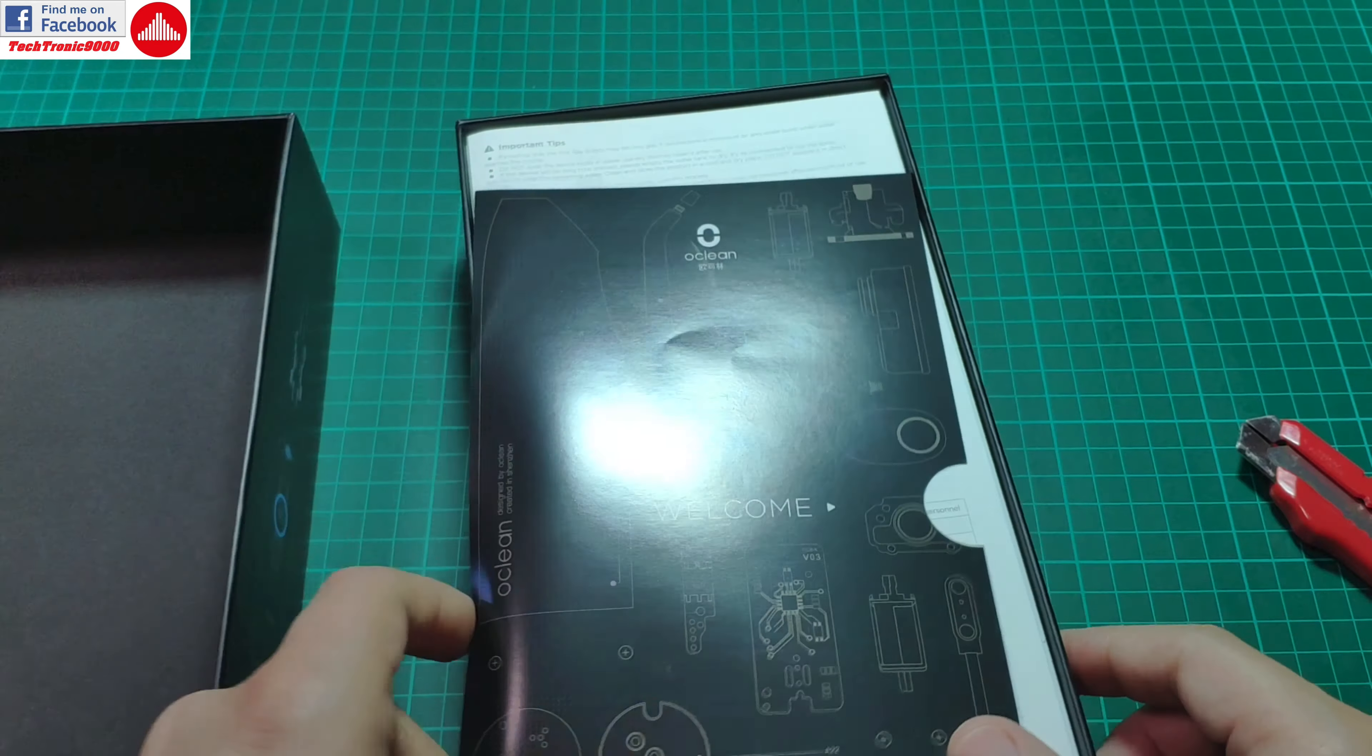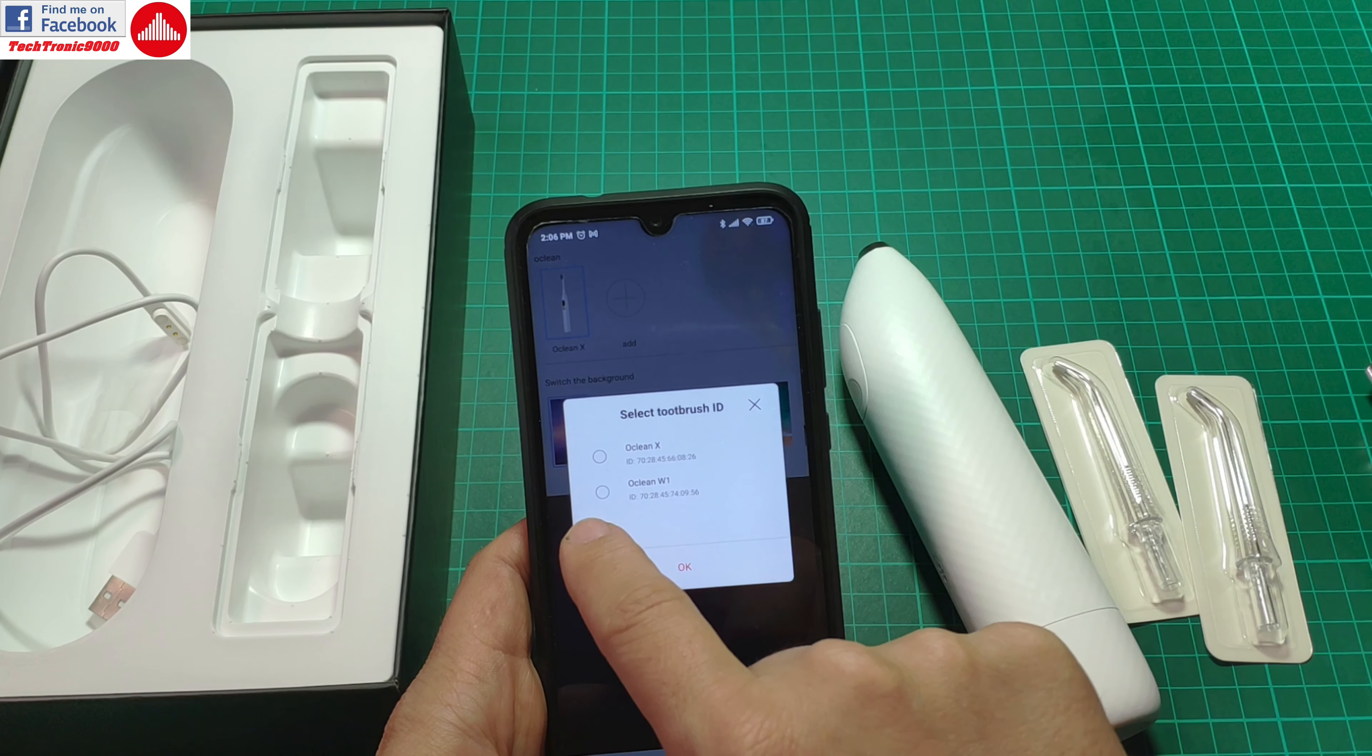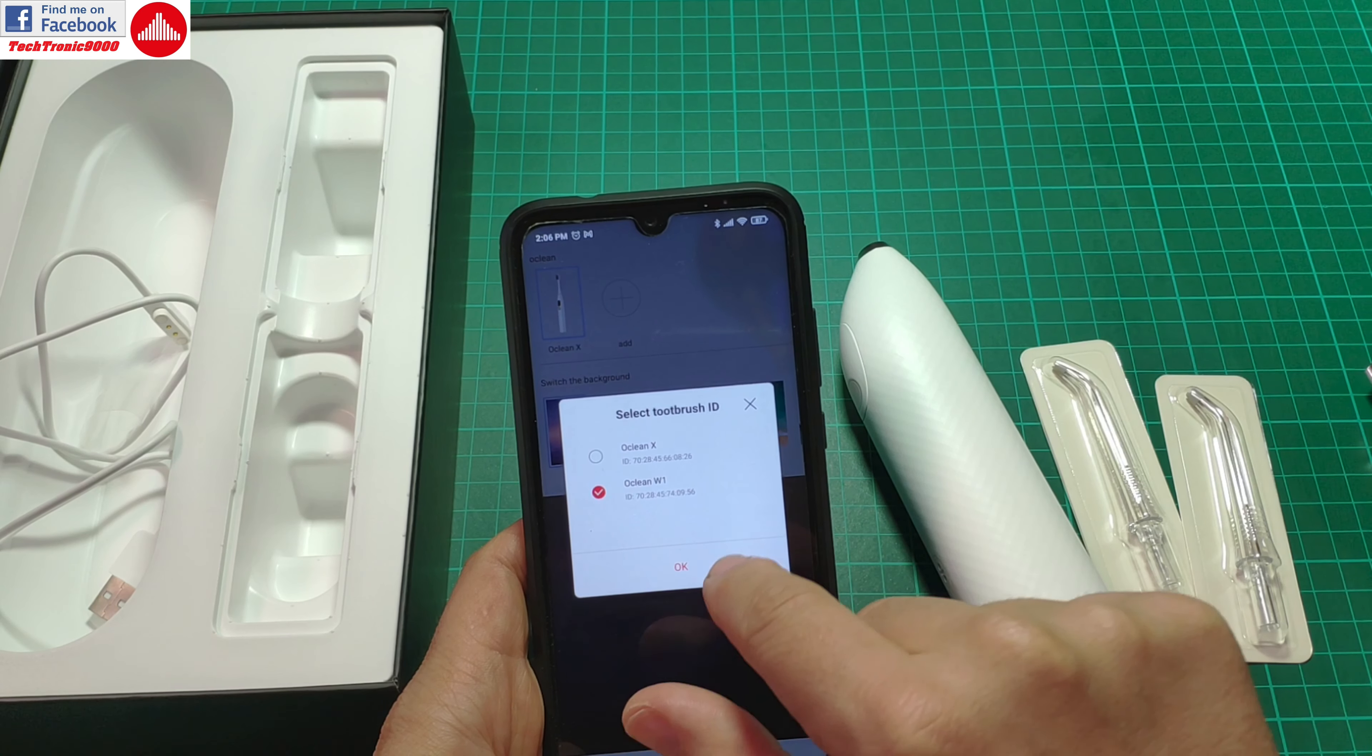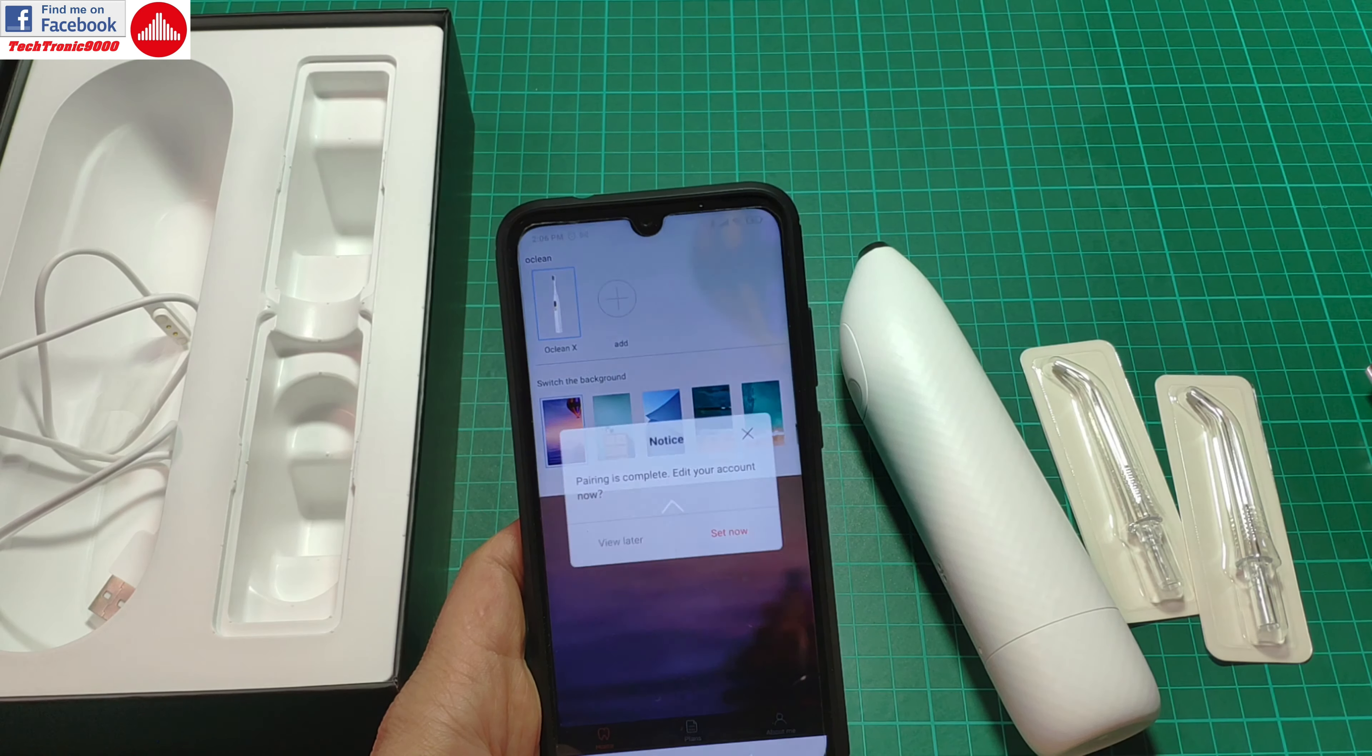I'm going to add now again and there you go. I'm going to select the W1. Pairing is now complete and I can set it up, so you can select here your profile. There is no data here because it hasn't been used, usage time zero days.